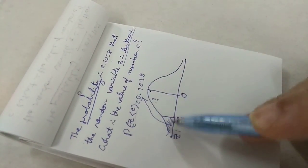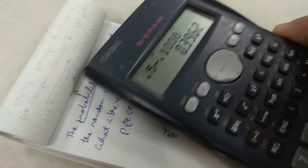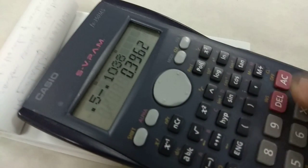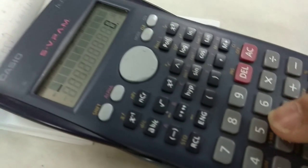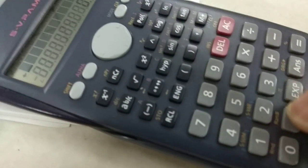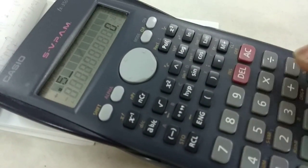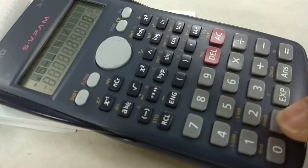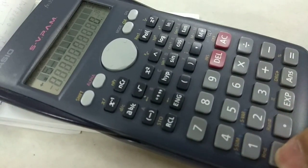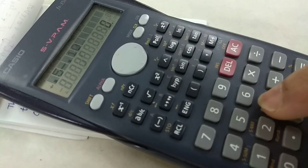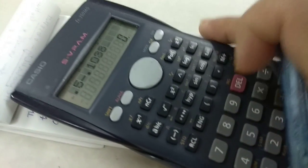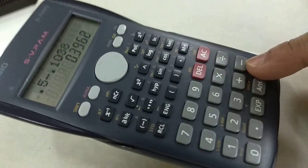The area on the left of zero is 0.5, so 0.5 minus 0.1038 equals 0.3962.